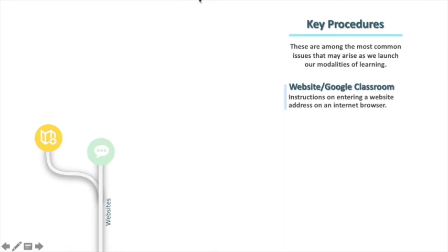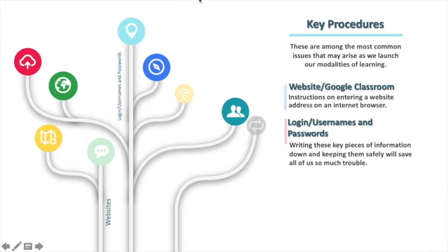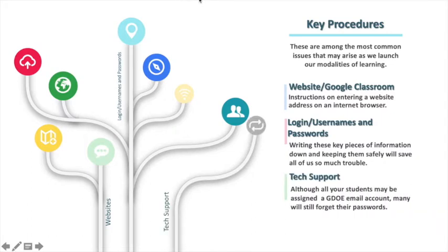Now we have some key procedures — these are the most common issues that may come up when we launch our modalities for learning. The first one: we are going to look at websites and Google Classroom. We can't assume that students are able to navigate these — it is challenging enough to remember the website. Making sure that students are able to access this on their devices, whether their smartphone, tablets, or laptops, is going to be key. Google Classroom is going to be a very common platform to deliver our curriculum, and we want to make sure that they can check all the assignments and resources we provide on that Google Classroom.